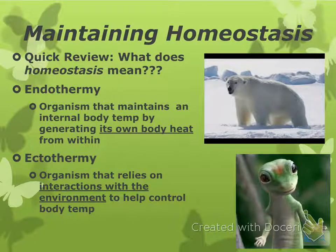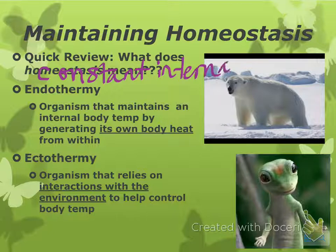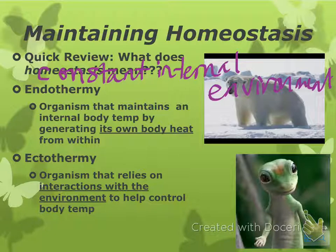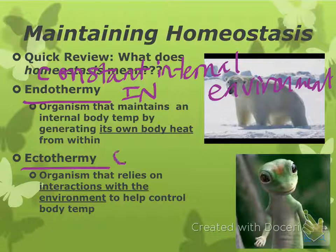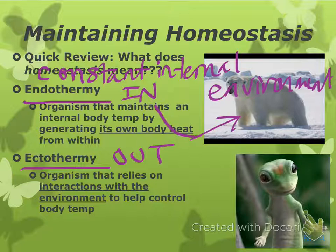So homeostasis — our favorite word. Quick review: what does it mean? Constant internal environment, like blood pressure and heart rate. We have two types: endothermy and ectothermy. Endo means in, ecto means out. An endothermic organism can maintain its own body temperature, which is why things like polar bears can live in the Arctic. Ectotherms, on the other hand, need the environment to help them control their body temperature, like a gecko.